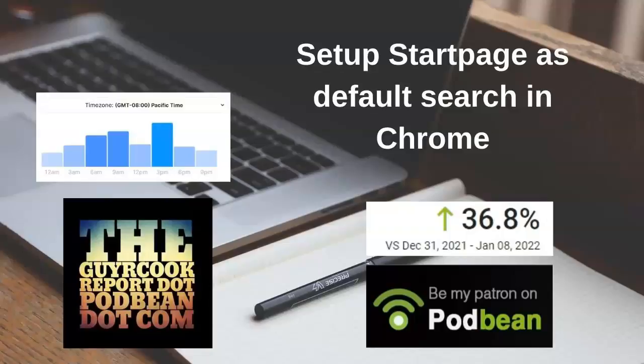Who is Startpage? Their website says Startpage is the world's most private search engine. They were founded in 2006 in the Netherlands, and since then they have provided best-in-class search results without collecting any personal information — so they're not going to get your phone number, your bank account number, or any of those bad things.